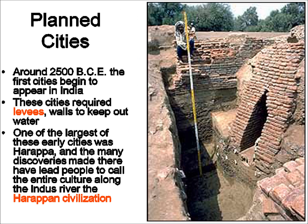About 4,500 years ago or so, cities were beginning to be built along the Indus River area in the Indo-Gangetic Plain. The cities required levees in order to hold back the water. A dam goes across the water and holds the river back from flowing. A levee would go alongside or around a town area in order to keep the water from flooding out of its normal banks. One of the largest of these early cities has been named Harappa, so we refer to the entire culture as the Harappan civilization.